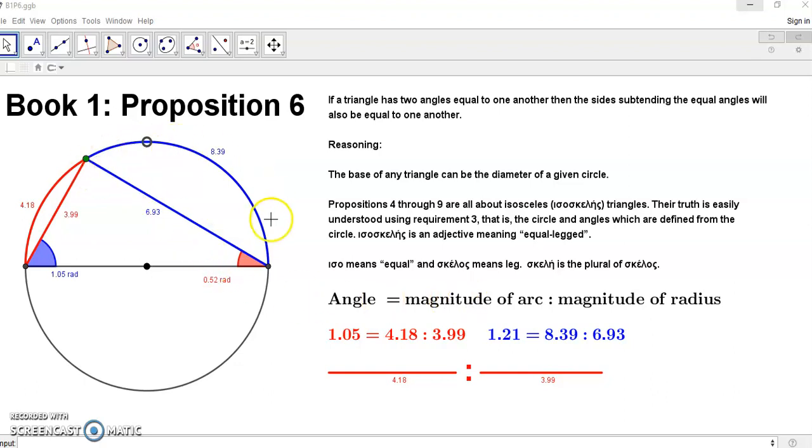It's the magnitude, it's the ratio of the magnitude of the arc to the magnitude of the radius. What is a ratio? Ratio just simply means a comparison. In this case, the angle is equal to the comparison of this length to this length, and likewise this length to this length. That's all that a ratio means. It's a comparison.